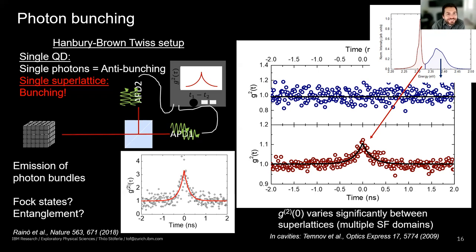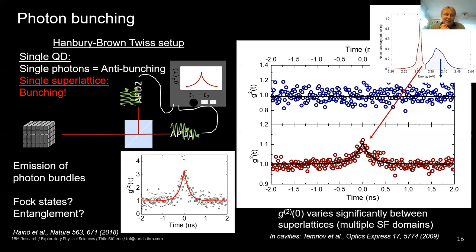A question from Jacek about polarization of light emitted from cubic structures: since the structures are cubic and emission is likely linearly polarized, does forming the superlattice also align the dipoles and polarization, and is this relevant for superradiance?